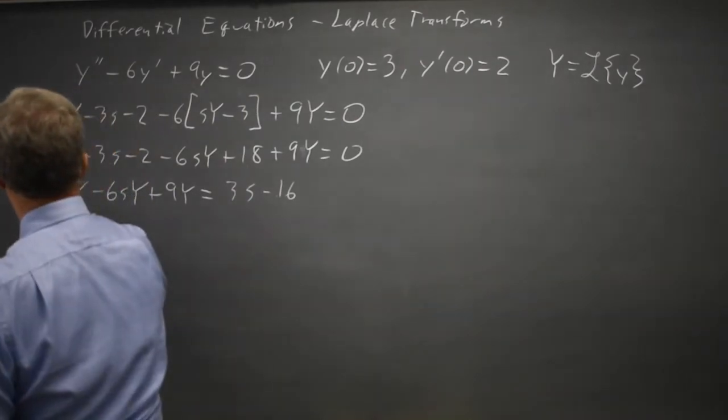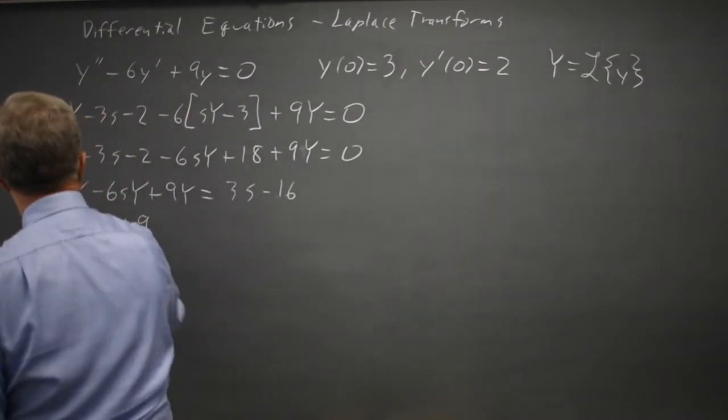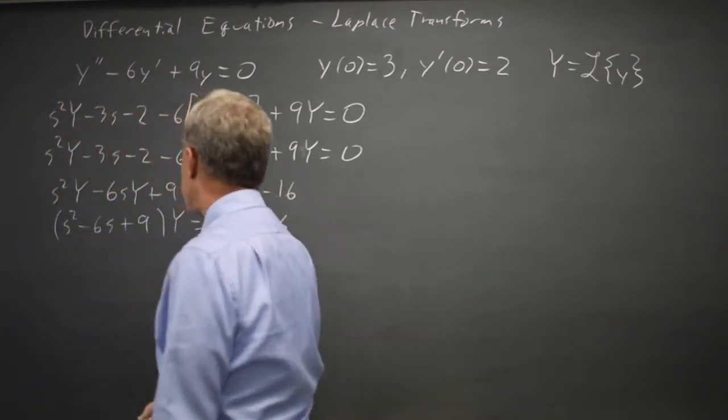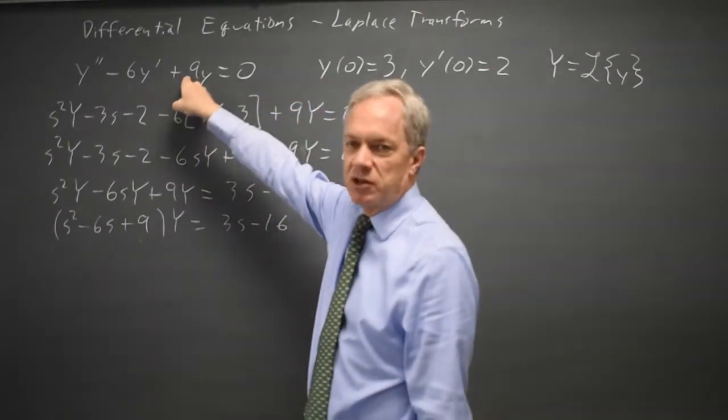Factoring out the common factor of Y, s squared minus 6s plus 9 times the uppercase Y equals 3s minus 16 and I notice that this polynomial here is my characteristic polynomial.